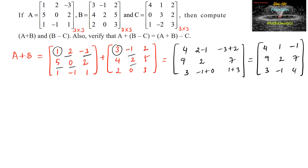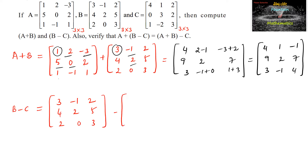Now let's find matrix B minus C. B minus C equals the first matrix B: 3, negative 1, and 2; 4, 2, and 5; 2, 0, 3 — minus matrix C: 4, 1, 2, 0, 3, 2, 1, minus 2, and 3.